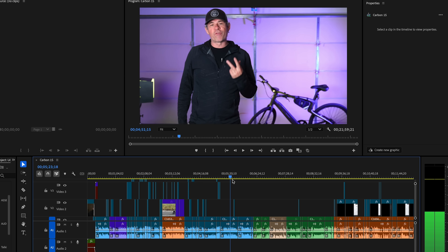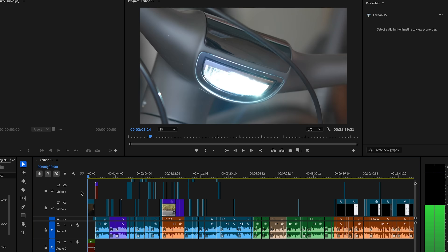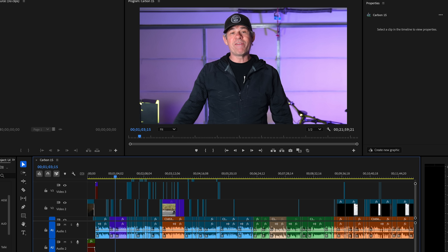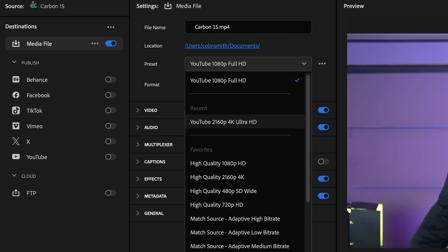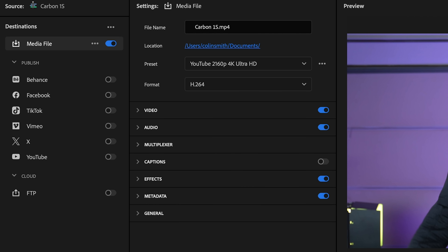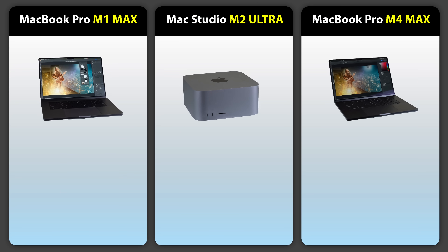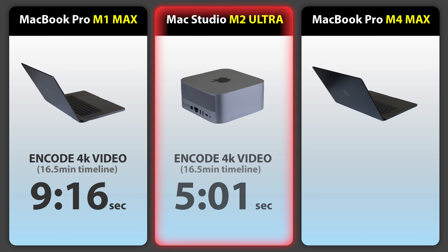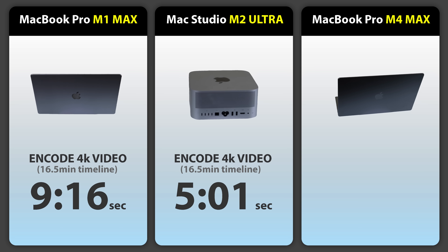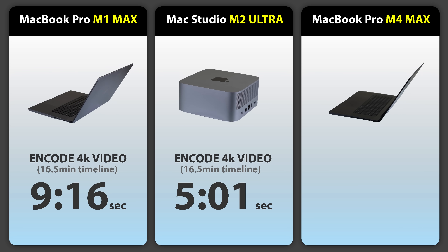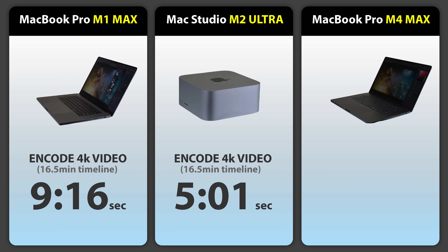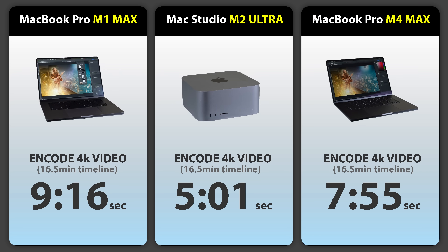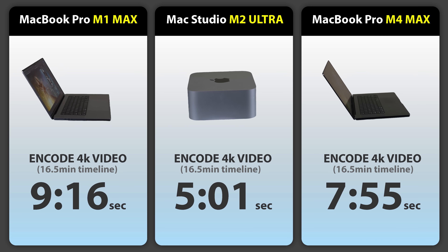For video, we're going to take a timeline with lots of different clips from multiple cameras — including drones, a Sony camera, other cameras, and iPhone footage. This is a 16 and a half minute video and we're going to export it to 4K using the YouTube 4K setting. The M1 MacBook Pro took 9 minutes and 16 seconds. The M2 Studio really starts to stand out — it took 5 minutes, almost twice as fast as the M1. The M4 MacBook Pro still beat the M1 but did not beat the M2, taking 7 minutes and 55 seconds. We can see the extra memory and extra cores in that Ultra chip really starting to kick in for video encoding.